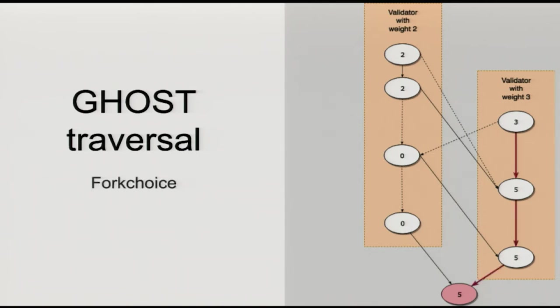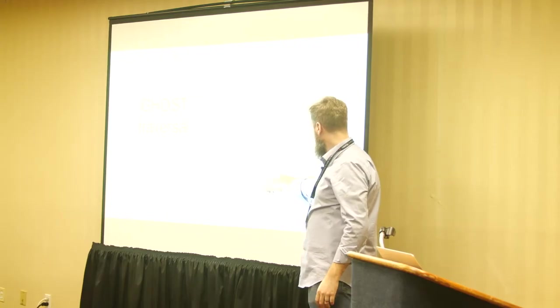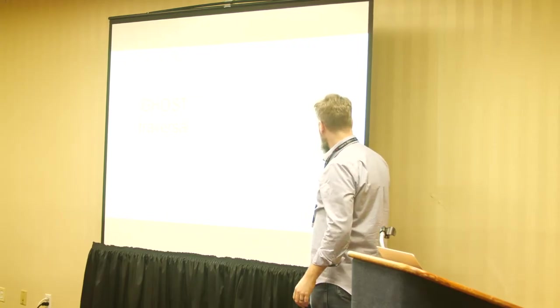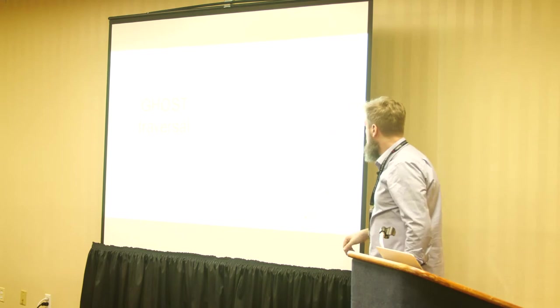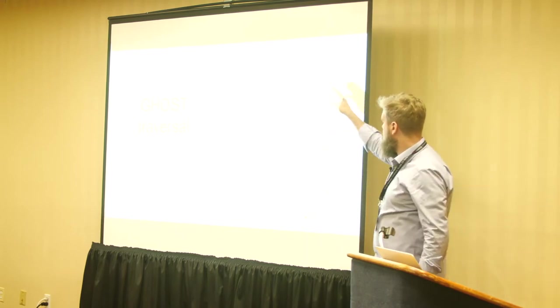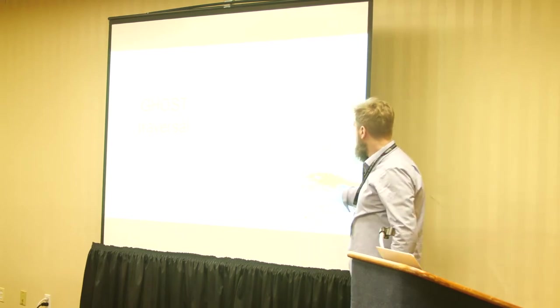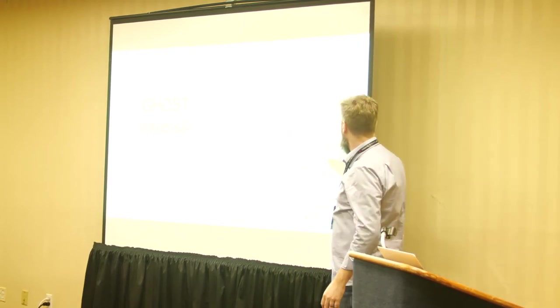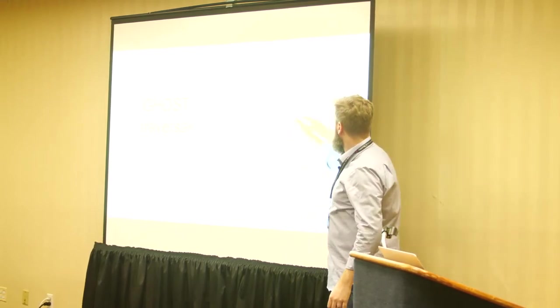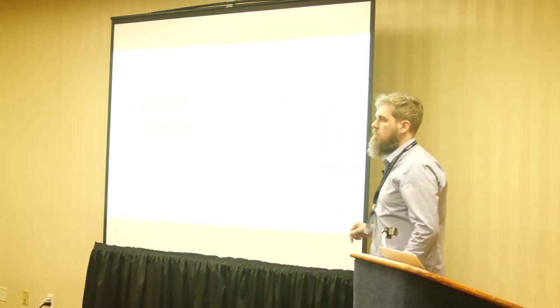The fork choice rule: starting from Genesis, five is bigger than zero so we go that way; following through, five beats zero and three beats two — the GHOST rule selects the heaviest path.